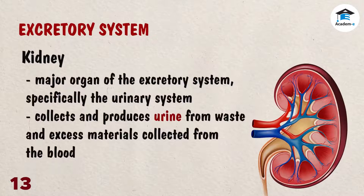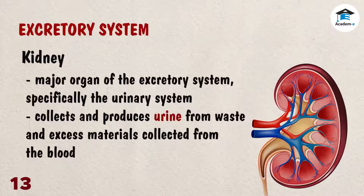The kidney is the major organ of the excretory system, specifically the urinary system. These paired, bean-shaped organs near your backbone collect and produce urine from waste and excess materials collected from the blood.